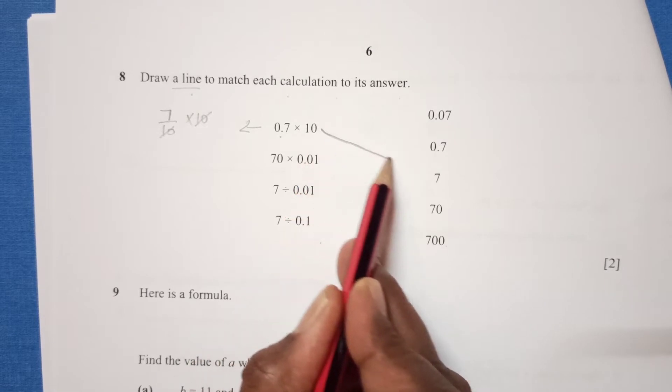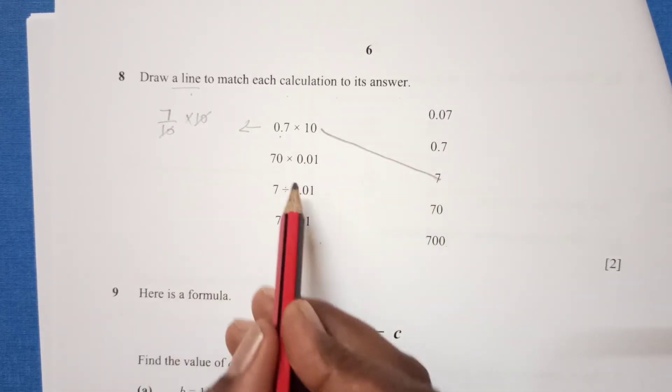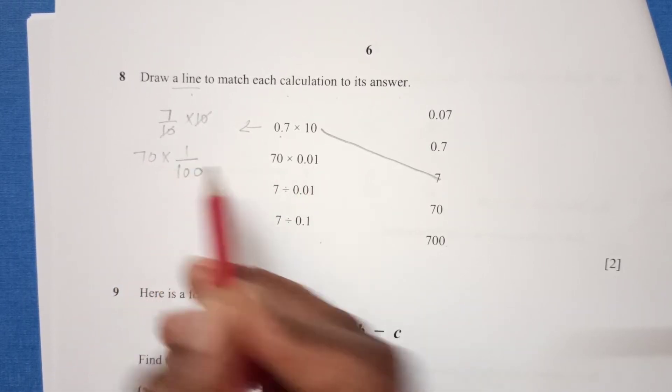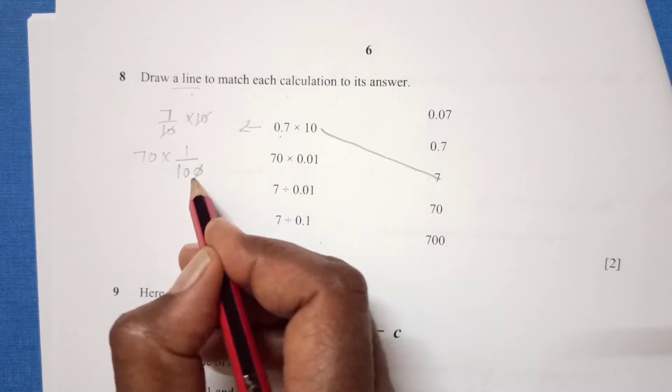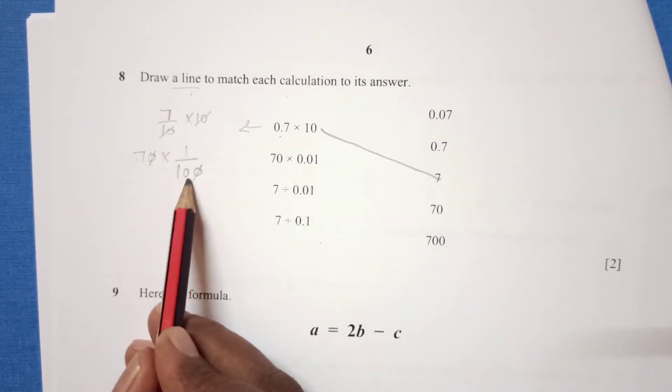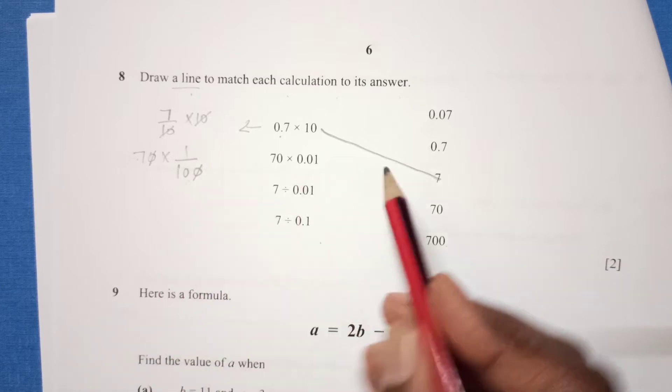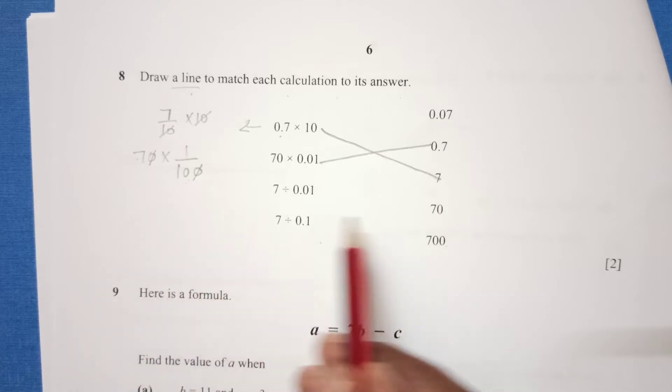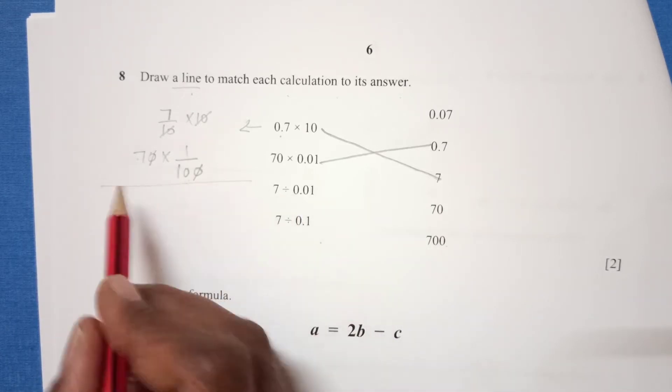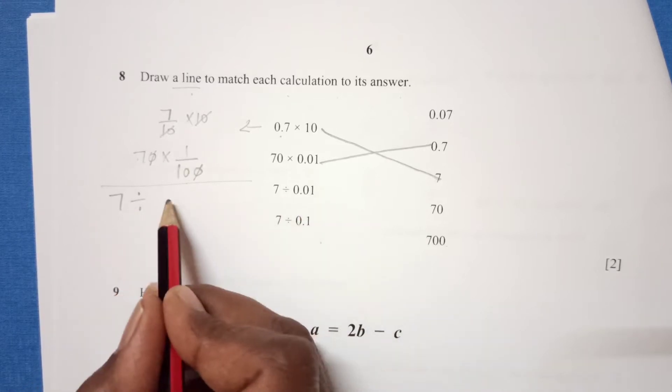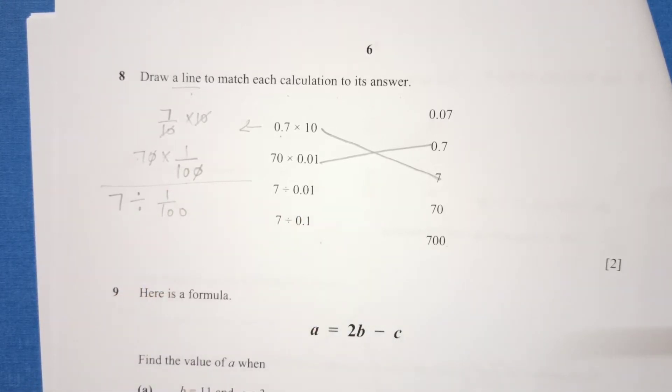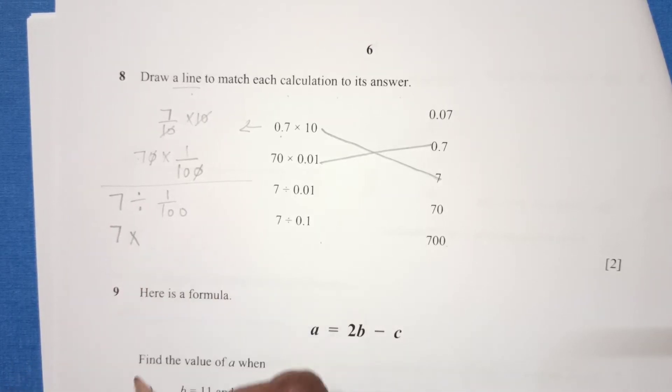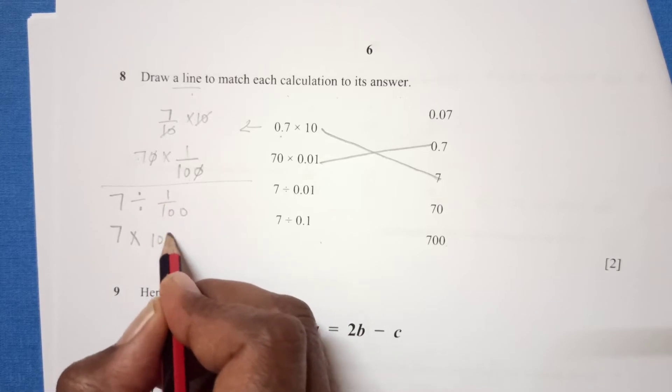Now here is 0.7 times 10. 0.7 can be written as 7 over 10 times 10. The 10s get cancelled, so our answer is 7. Now 70 times 0.01 can be written as 1 over 100, so these zeros cancel and we have 7 over 10, which is 0.7.